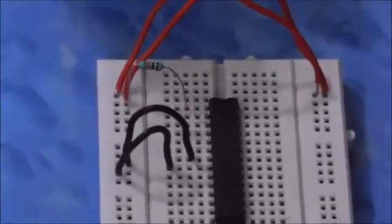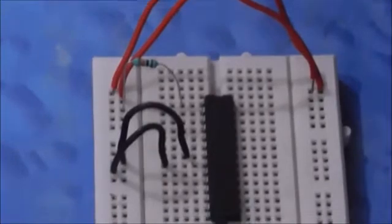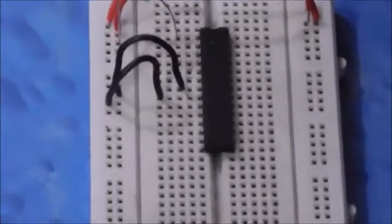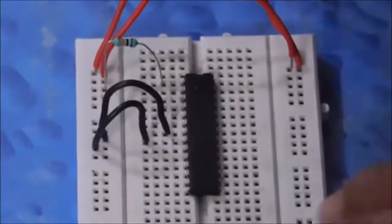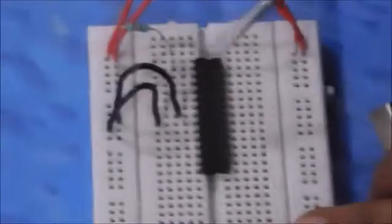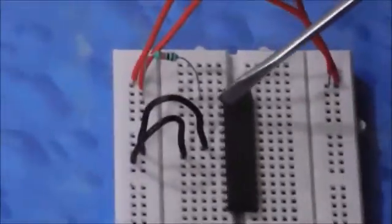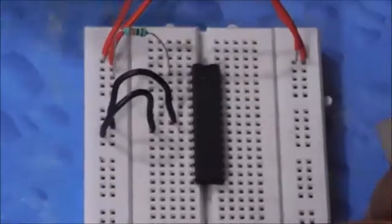Now I will connect my crystal. It's a 16 MHz crystal. It provides the clock pulse to our microcontroller. And this is very necessary. Now I will connect it to pin 9 and pin 10. 1, 2, 3, 4, 5, 6, 7, 8, 9, 10. These two pins are 9 and 10.